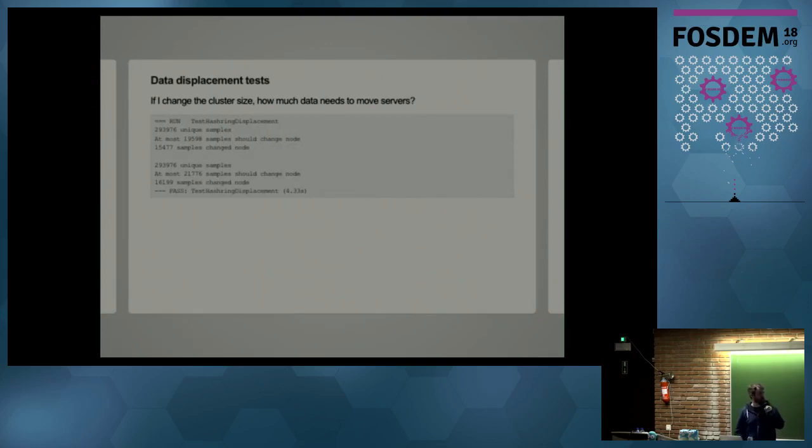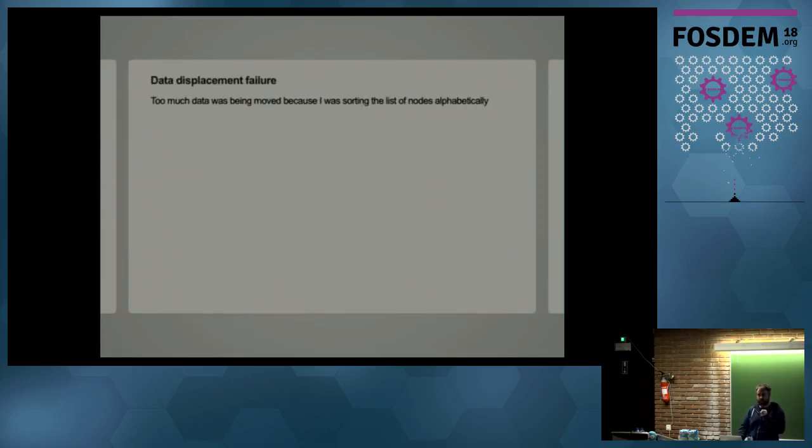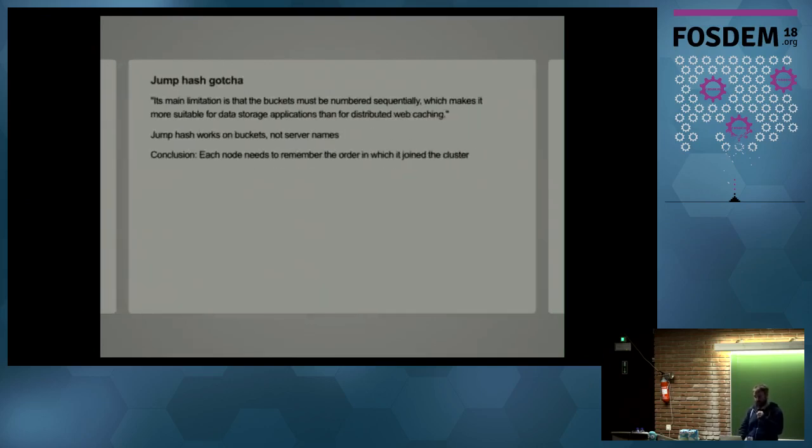And this was really helpful because when I changed the consistent hashing algorithm, I could actually see the difference and see the improvement in balance when I switched to JumpHash. So the other thing I looked at was data displacement. So if I remove a node, how much data has to move? And this helped me find a bug because I was sorting the list of nodes alphabetically because I figured that would make it more deterministic and determinism is a good thing. But in this case, it didn't actually help because it worked against the way that JumpHash works. And in the JumpHash paper, it says that the main limitation is that buckets must be numbered sequentially. And I was treating them as names of servers rather than just numbers of buckets. So my conclusion was that each node in the cluster needed to remember in which order it joined the cluster.